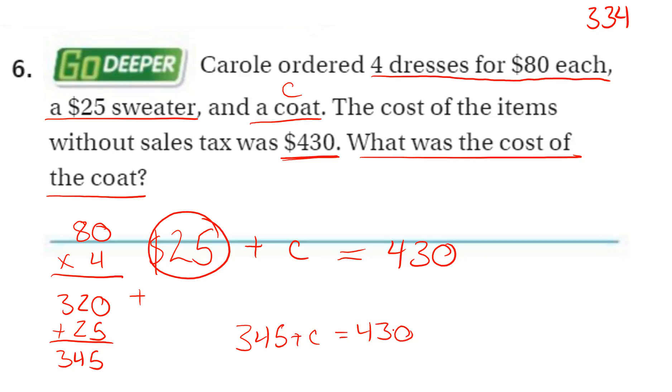So now we have $345 plus C equals $430. And now we go back to one of our lessons before, where we subtract. Since we have addition, the opposite of addition is subtraction. So we subtract $345 from both sides.